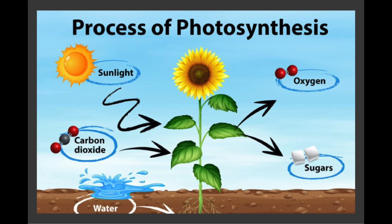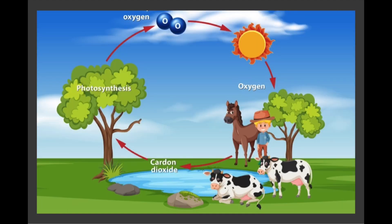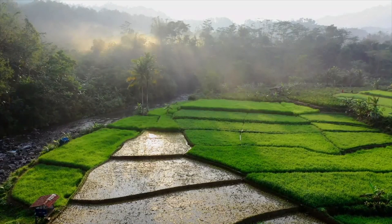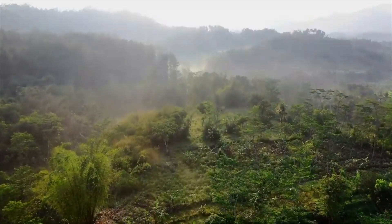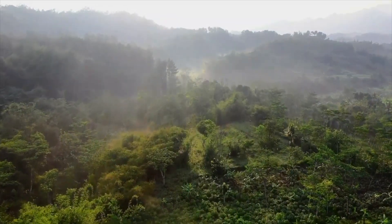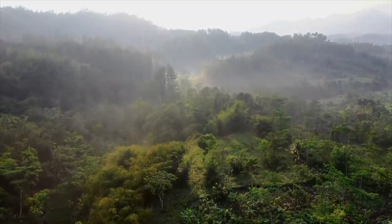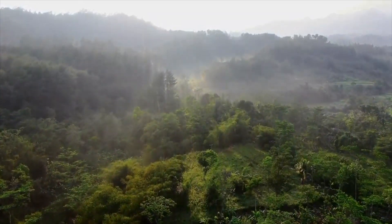Man and animals get the oxygen they need by breathing in air. Oxygen gives our cells the ability to break down food in order to get the energy we need to survive. Animals and man release carbon dioxide into the air when they breathe. Plants extract carbon dioxide from the air and use it to produce energy. Without air, our planet will be lifeless. Thus, air is one of the biggest essential factors necessary for the survival of any living species.